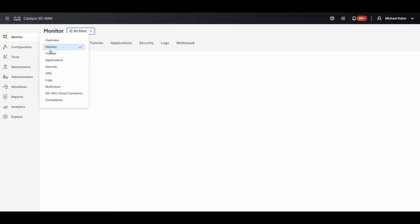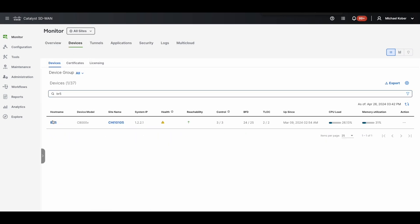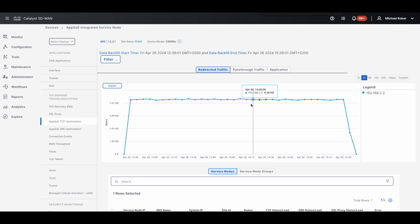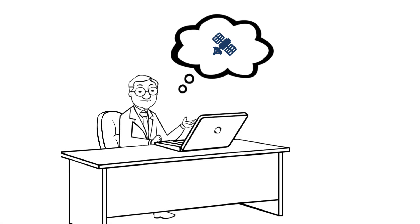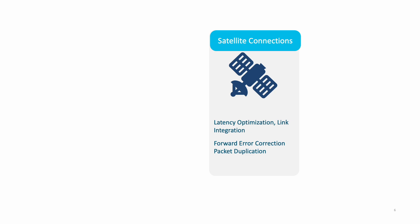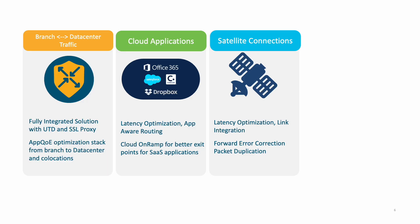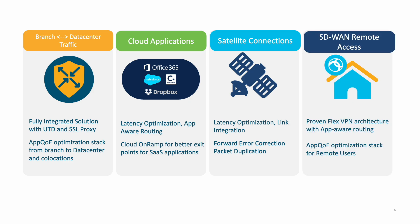TCP optimization can be monitored using both show commands and the SD-WAN Manager device dashboard. With the AppQE feature, Nick is able to eliminate the latency for the satellite links in his network. Bob gets better application performance for the cloud applications. And there are even more deployment use cases, like branch-to-data-center traffic as well as SD-WAN remote access connections.